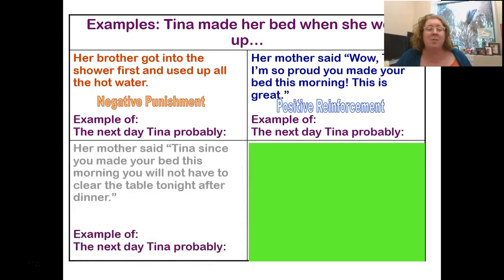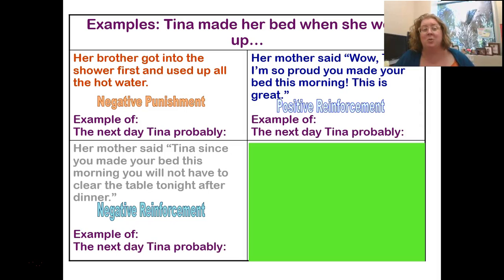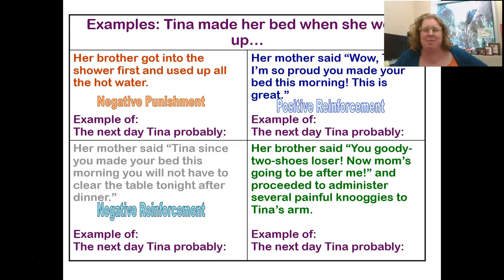Her mother says, 'Tina, since you made your bed this morning, you will not have to clear the table tonight at dinner.' Is that a reinforcement or punishment, and is it positive or negative? That's negative reinforcement — she's going to make her bed again, and her mother took something away: having to clear the table. Finally, her brother said 'you goody two shoes loser' and proceeded to administer several painful nuggies to Tina's arm. Is that punishment or reinforcement, and positive or negative? It's a presentation punishment — she's not going to make her bed again, and it's something her brother did.